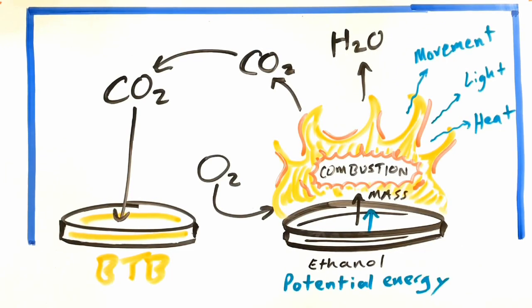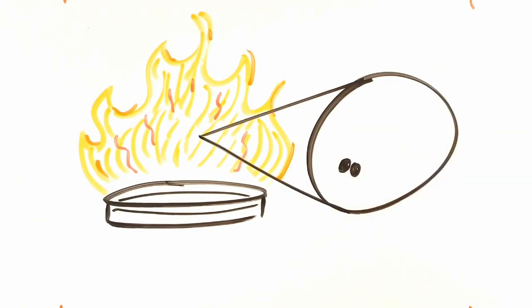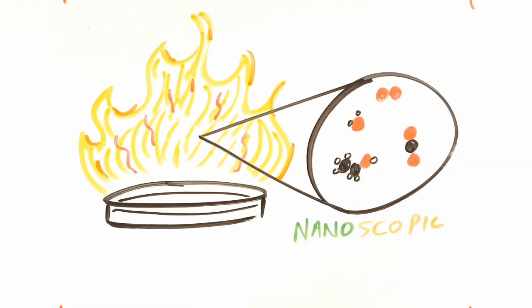The energy that we saw coming out as movement, light, and heat must have been in the ethanol to begin with, and we called that potential energy. But we're here to explain what happens to the atoms and molecules as the ethanol burns. Remember from our video on size and scale that objects of this size are called nanoscopic.